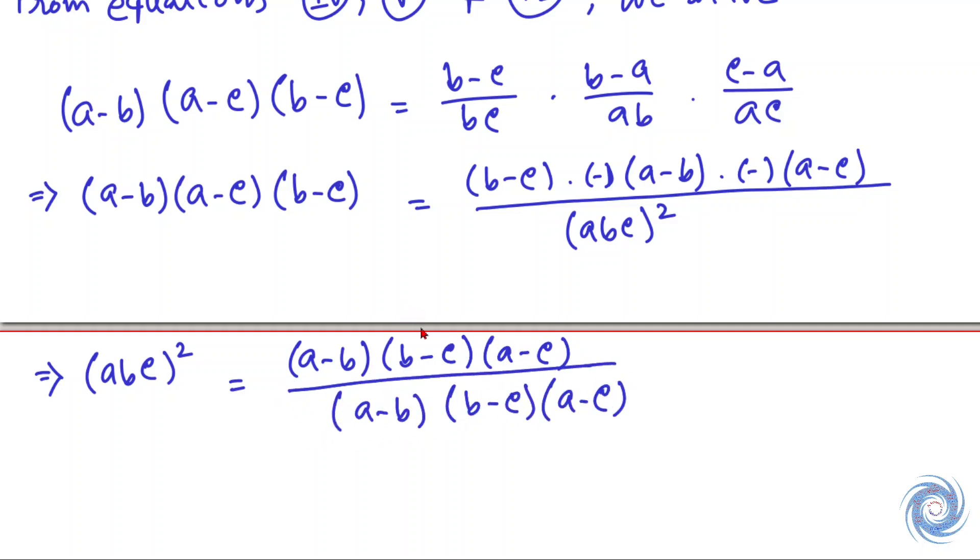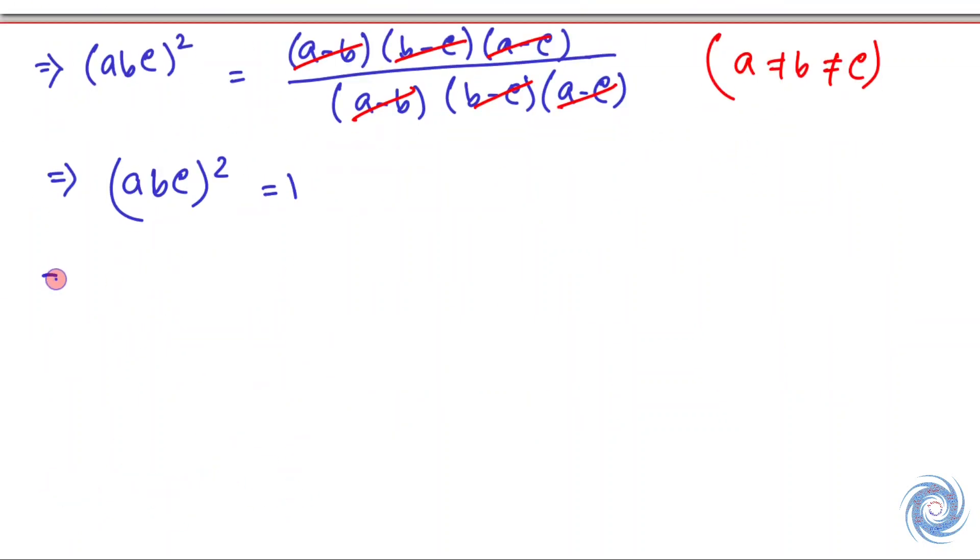Since it is given that a, b, c are non-zero and they are not equal, therefore this equation makes sense. So from here we have (abc)² = 1, and this implies abc = ±1. So finally we have |abc| = 1.